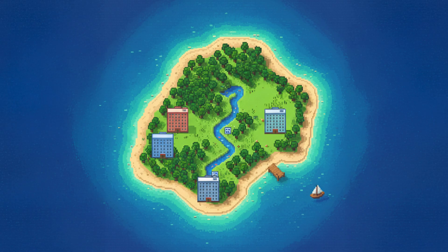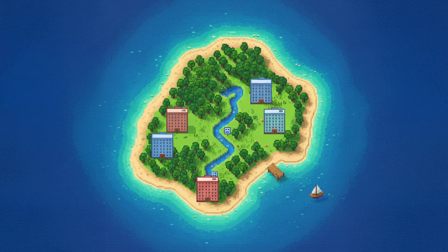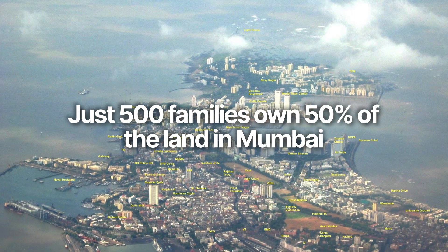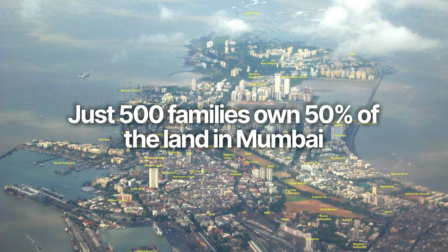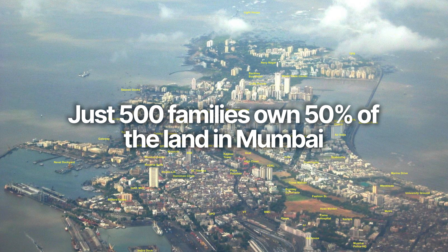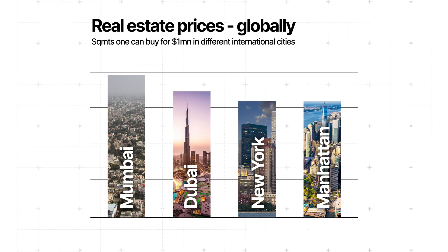But if the city was built more vertically, then it can accommodate a lot more people because there's a lot of supply. This is the exact same problem in Mumbai. Just 500 families own 50% of the land in Mumbai. By controlling the supply of this real estate, they can control the price of real estate in Mumbai, which is why you see real estate prices in Mumbai are higher than Dubai and even many American cities.